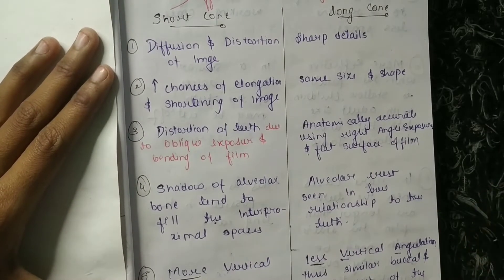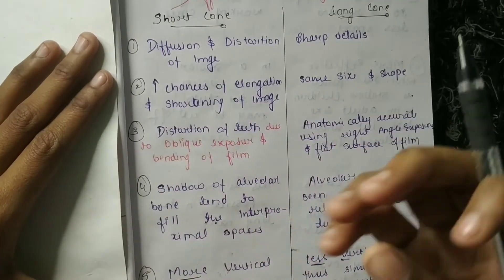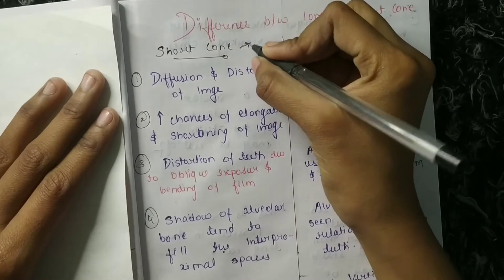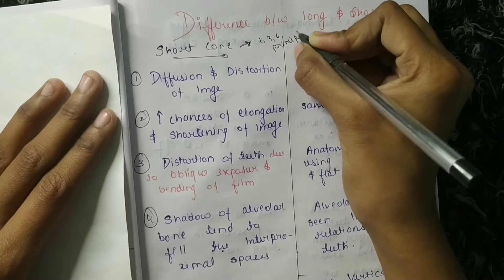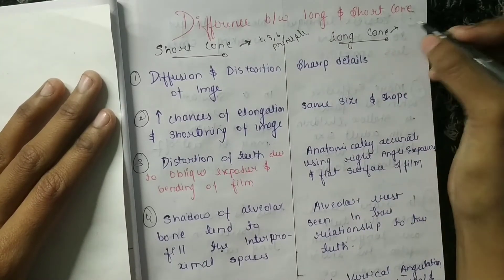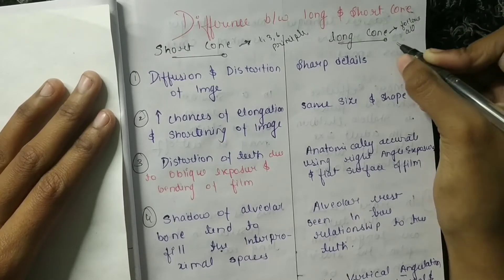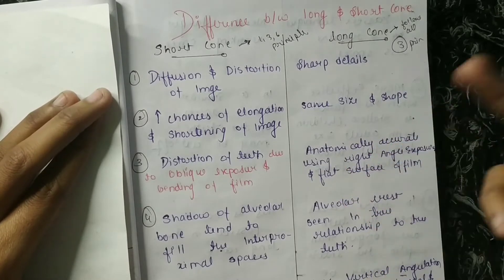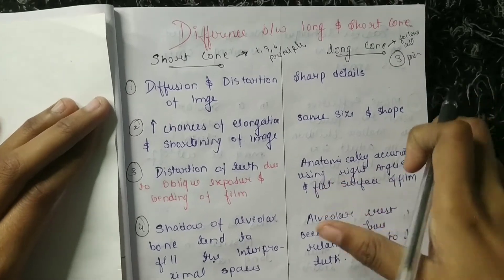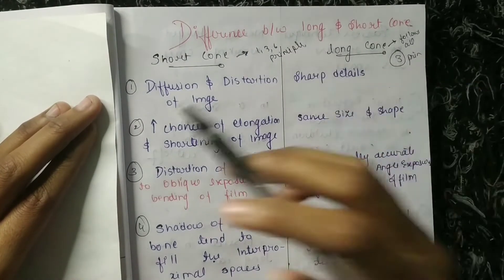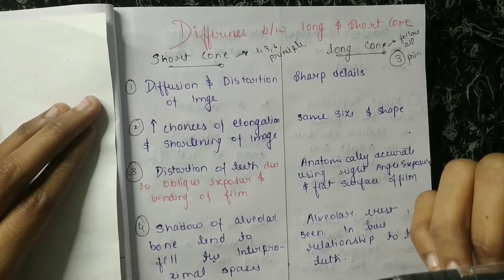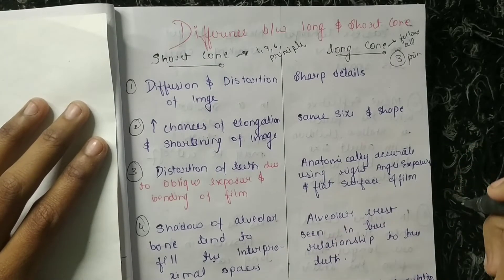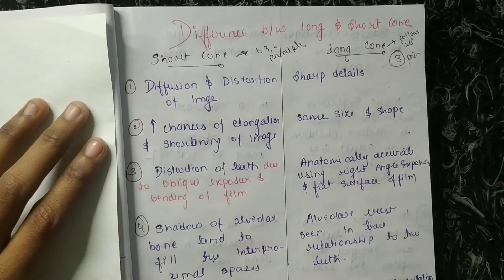The first difference: in short cone technique you get distortion or diffusion of the image. This happens because short cone only follows the first, third, and sixth principles of projection geometry. Long cone follows all principles except the third — that the object-to-film distance should be shorter. Because long cone follows all other principles, you will get sharp details.